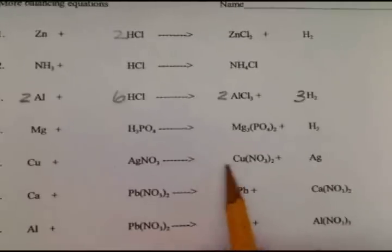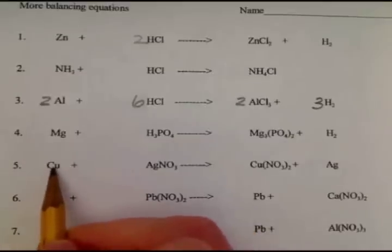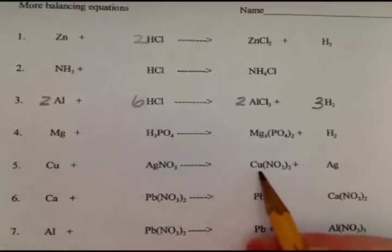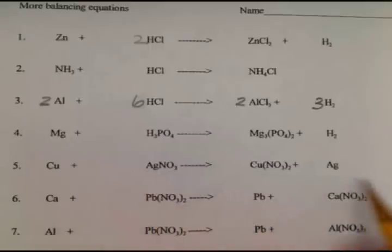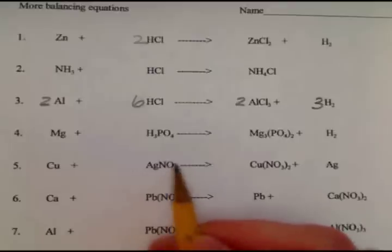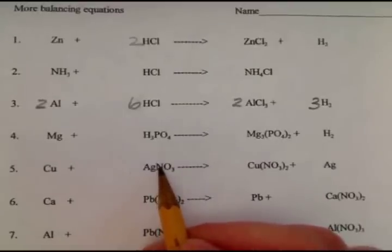Alright, let's try one that's a little more difficult, one with parentheses or something. So let's go down to this guy. So again, one copper on the left, one copper on the right. One silver on the left, one silver on the right. Now this NO3 thing is kind of tricky. There's a couple ways to think about it. The first way is you can go down and break up the nitrogens and oxygens, and that's fine.